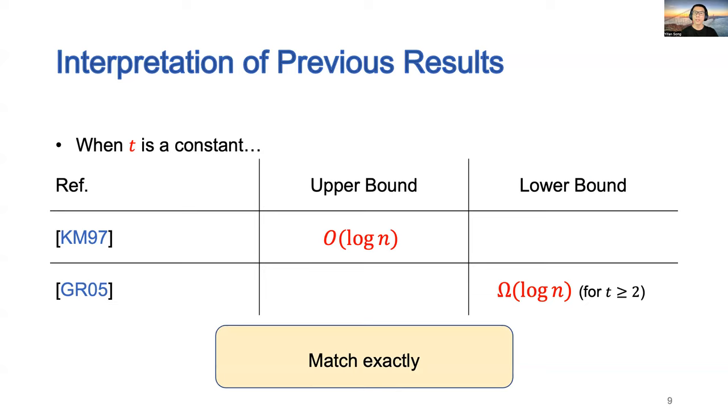On one hand, when t is a constant, the upper bound from KM97 matches the lower bound from GR05. On the other hand, when t is very close to n, say t is equal to n minus a constant, then the upper bound from KM97 matches the lower bound from BDPV99.